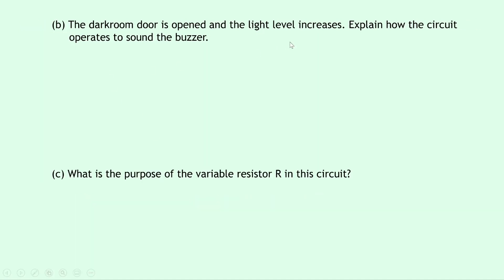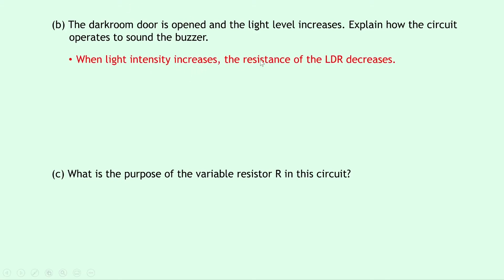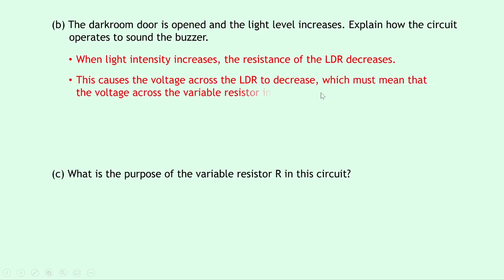Part B says that the dark room door is opened and the light level increases — explain how the circuit operates to sound the buzzer. Using the LURD rule for LDRs: as light goes up, resistance of the LDR goes down. So when light intensity increases, the resistance of the LDR decreases, which causes the voltage across the LDR to decrease. Voltage and resistance are directly proportional, so they do the same thing.